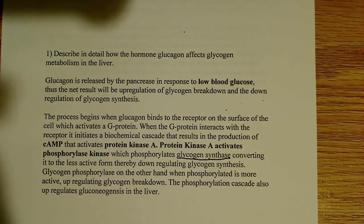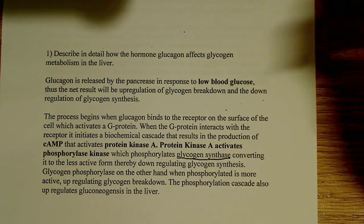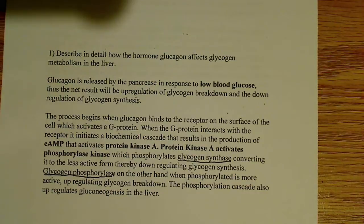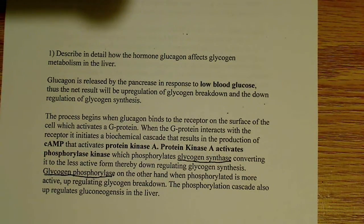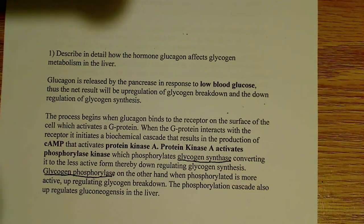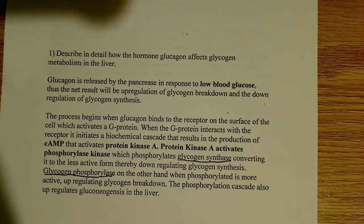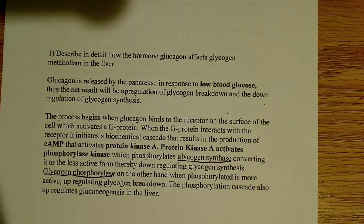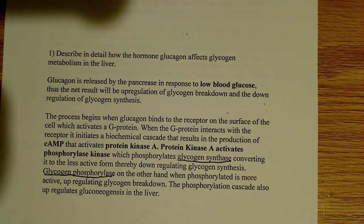Glycogen phosphorylase, on the other hand, when phosphorylated, is more active, up-regulating glycogen breakdown. Glycogen phosphorylase — when phosphorylated — is more active, and that's going to up-regulate glycogen breakdown, which is exactly what we want. Up-regulating glycogen breakdown means we're releasing glucose into the blood, which allows us to respond extremely rapidly. The glycogen molecule itself is very branched, and that branching allows many starting points for breakdown, so we can rapidly release glucose into the bloodstream. The phosphorylation cascade also up-regulates gluconeogenesis in the liver — another important point you will lose points if you don't mention.